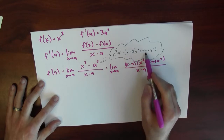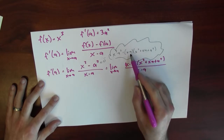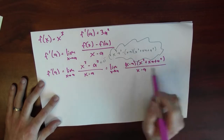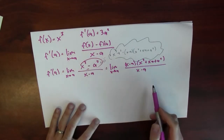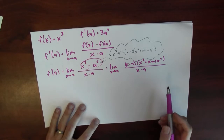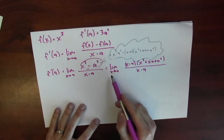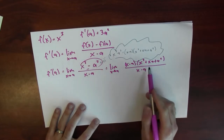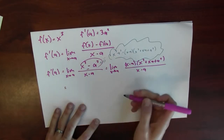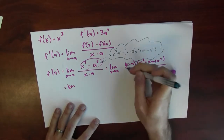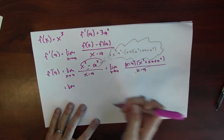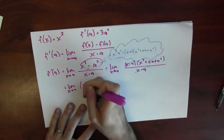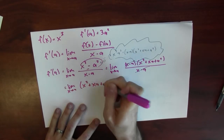For example, x times xa is x squared a, and that is cancelled by minus a times x squared. So you can verify that everything else cancels. So I replaced the numerator — I factored the numerator. The limit as x approaches a doesn't depend on what this equals when x equals a, and in fact it isn't even defined when x equals a. That means this limit is the same as the limit when I cancel the x minus a terms in the numerator and denominator. So this is the limit as x goes to a of x squared plus xa plus a squared.